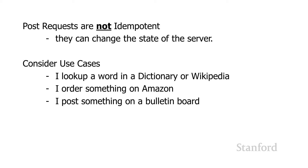However, if I were a Wikipedia editor actually modifying a page, that's a different request — the lookup should use GET, but changing information on Wikipedia should use POST because it makes a change on the server. Ordering something from Amazon also needs to be a POST request, because the server's database is being modified to include information about the new order. Posting on an electronic bulletin board requires a change on the server so other people can see it.